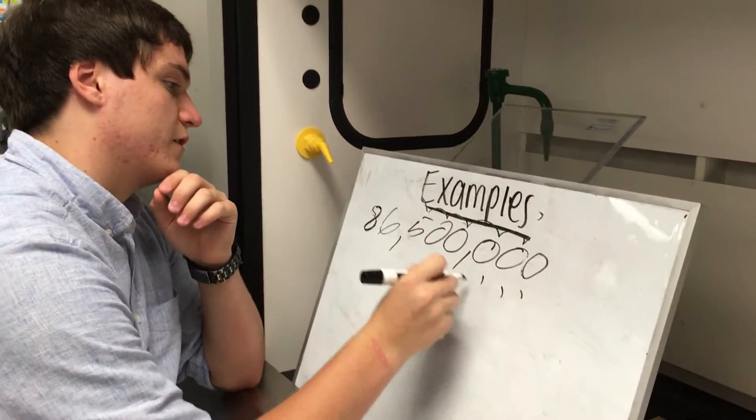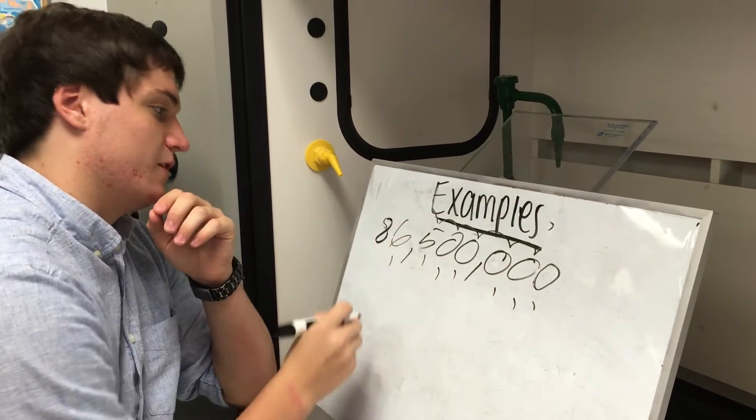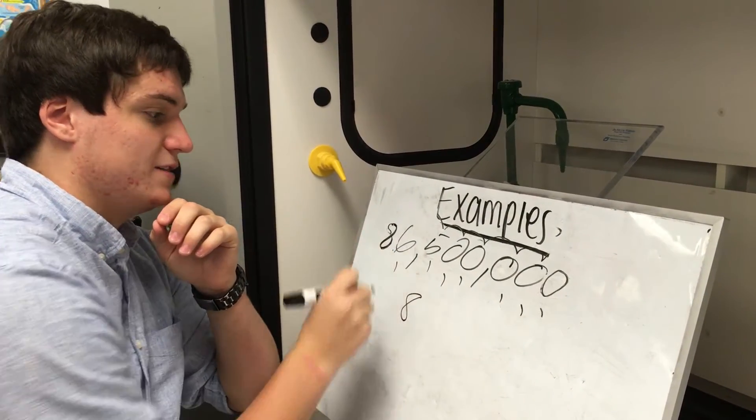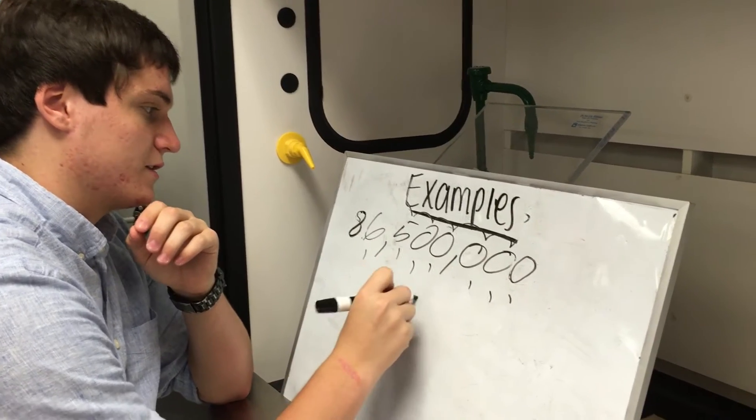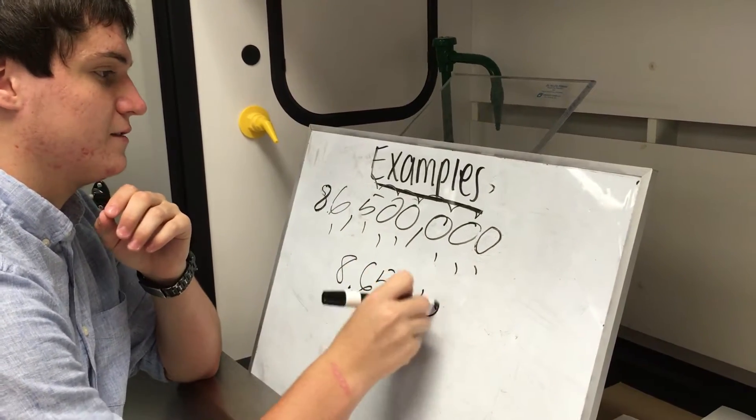That's one, two, three, four, five, six, seven. So what we do is move the decimal place to this place. So 8.65 times 10 to the 7th.